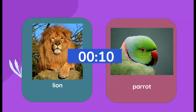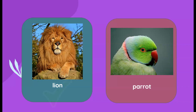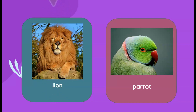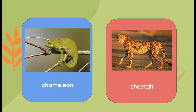It is the lion! Yes, look at the fur of the lion — it is definitely a mammal. Parrots don't have fur, they have feathers. Parrots are birds. Which one is the mammal here — is it the chameleon or the cheetah?